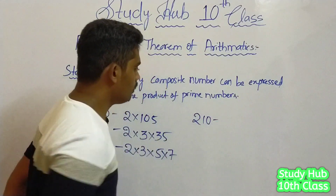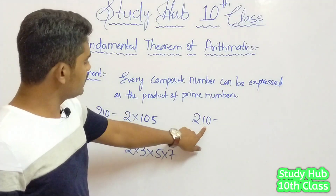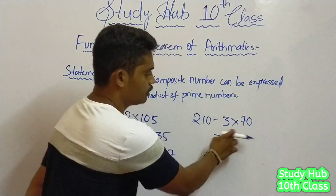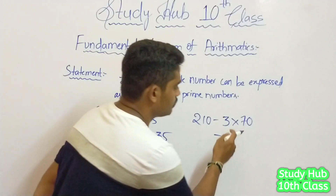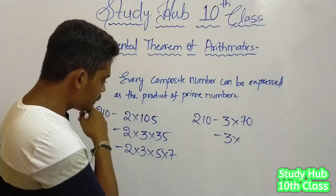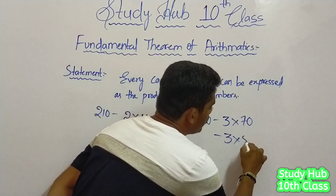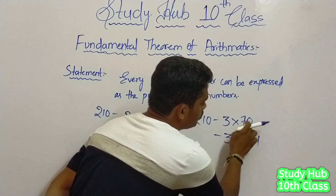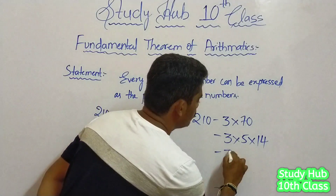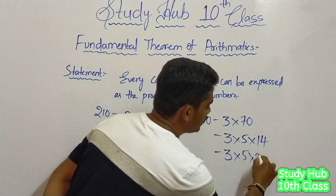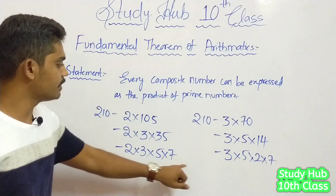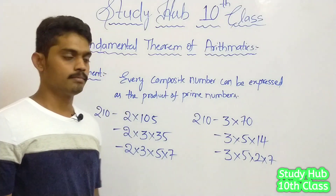210 — when I see 210, I get 3 into 70. So I can write 3 into 70. And 70 we can write as 5 into 14, and 14 as 2 into 7. So we get 3 into 5 into 2 into 7. Do you find any difference between 2, 3, 5, 7 and 3, 5, 2, 7?